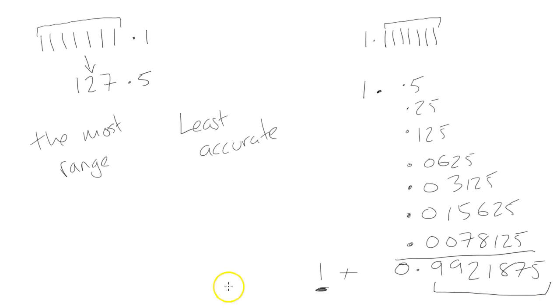So that's essentially fixed point. You have to decide where you put the actual fixed point. Now we're going to take a look at another example, which is floating-point numbers.